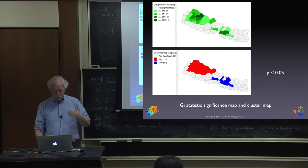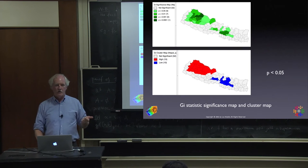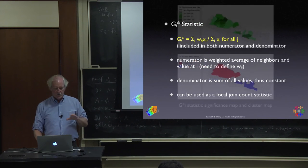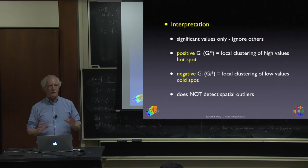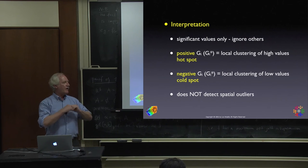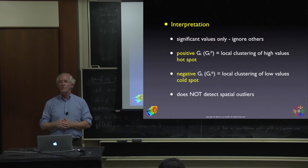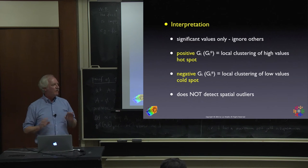The difference between G_i and G_i* is minimal — in none of my examples have I found a meaningful difference. There is also hardly any difference between the G statistic results and the local Moran results. Interpretation is the same: ignore non-significant ones; positive gives hot spots, negative gives cold spots. People like the G statistic because instead of four categories you have just two — hot or cold. Very intuitive.